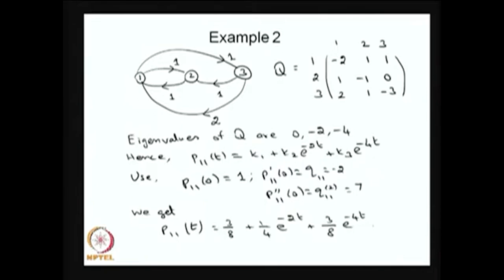Since it is a finite state CTMC, there are many ways to get the time-dependent solution. Basically you have to solve the system of differential equations with the initial condition. Here I am using the Eigenvalue method — that means finding the eigenvalues for the Q matrix.